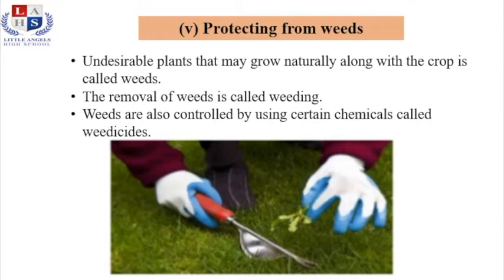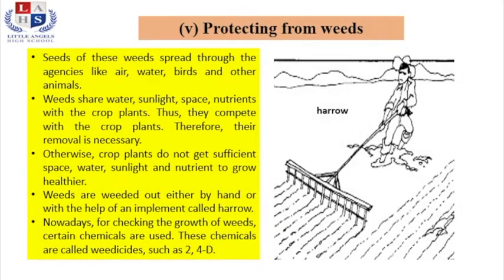On large-scale crop production, weeds are also chemically treated. The chemicals used for this purpose are known as weedicides. In this slide I will discuss how these weeds propagate from one piece of land to another.